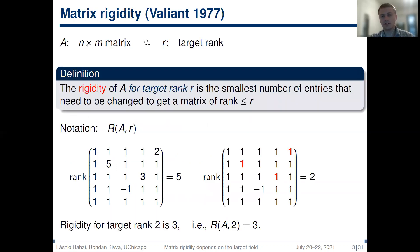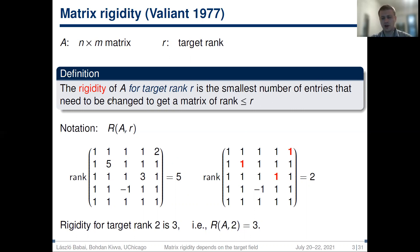Matrix rigidity was introduced by Valiant in his seminal 1977 paper, where for matrix A and target rank R, he defined rigidity to be the smallest number of entries that need to be changed to get a matrix of rank at most R. We use capital R to denote the rigidity of matrix A for target rank R.